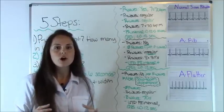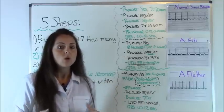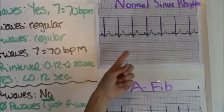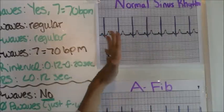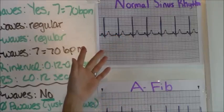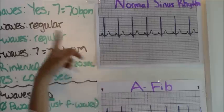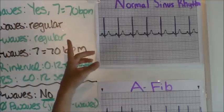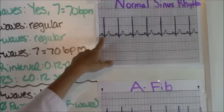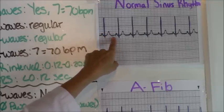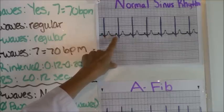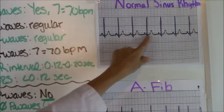Now let's go over what a normal rhythm looks like and compare it with atrial fibrillation and atrial flutter. Right here you have normal sinus rhythm. We're going to apply those five steps to analyzing this rhythm. First, we're going to look to see if there are P waves present. You know your P waves appear before your QRS complexes, and right here in green you can see our P waves. So yes, we do have P waves.